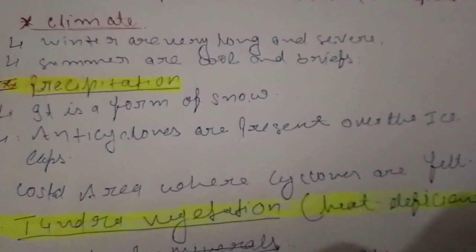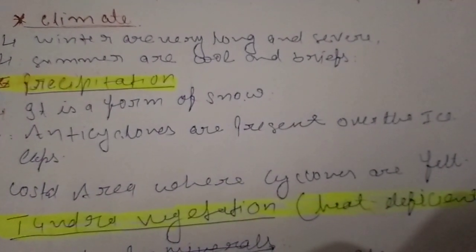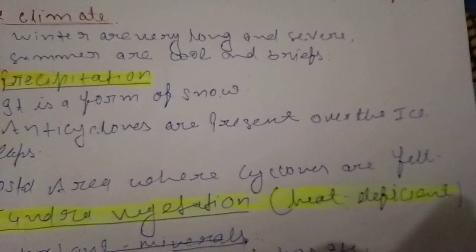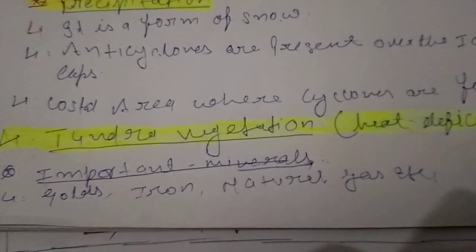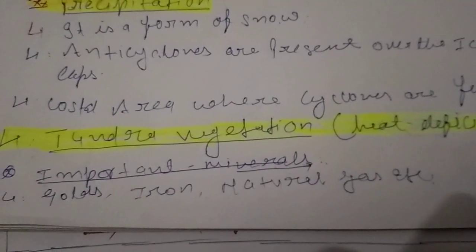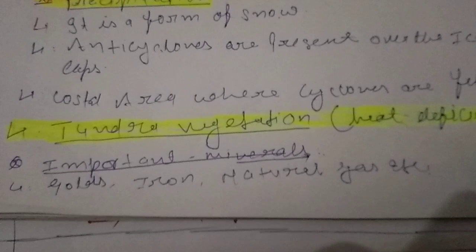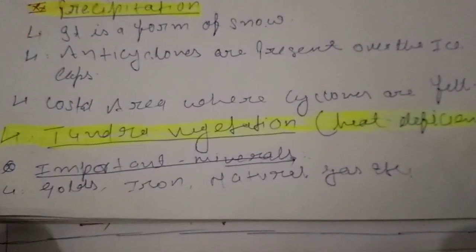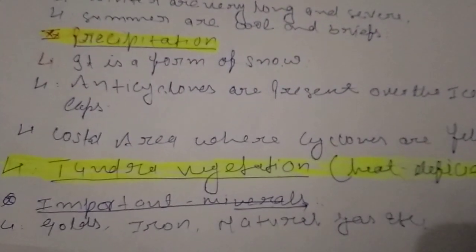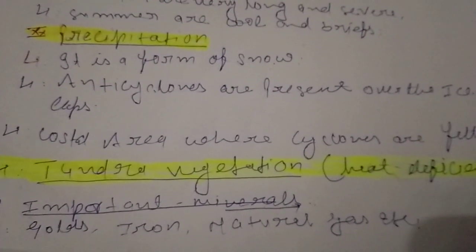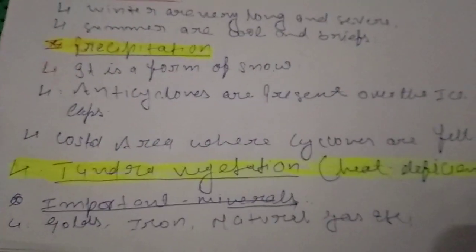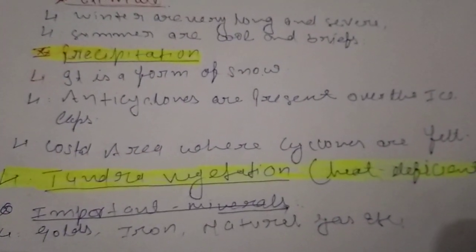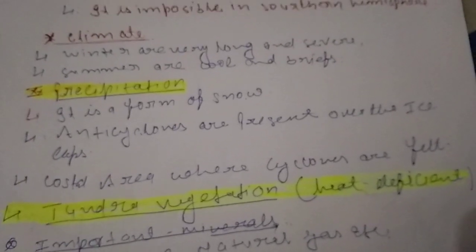Vegetation is tundra type because of heat deficiency. Importantly, mineral resources attract countries from the rest of the world, such as gold, iron, and natural gas. This is all about the summary of GC Leong Chapter 25.